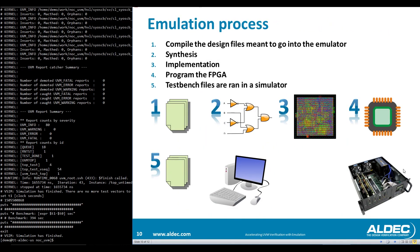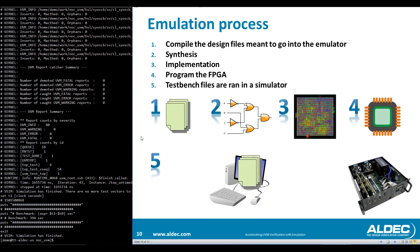The emulation process using HESDVM involves a few steps. First, compile your design files using HESDVM, where typical compile-time issues such as syntax errors are caught. Then synthesis occurs, where the design is converted to a gate-level netlist. During implementation, the gate-level netlist is mapped to resources in the programmable logic, producing a bitstream file used to program the FPGAs. Finally, you run the test bench files in a simulator, and the simulator communicates with the emulator to stimulate the design.